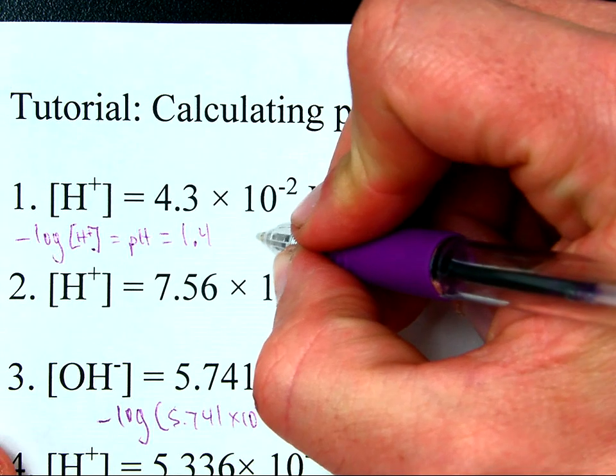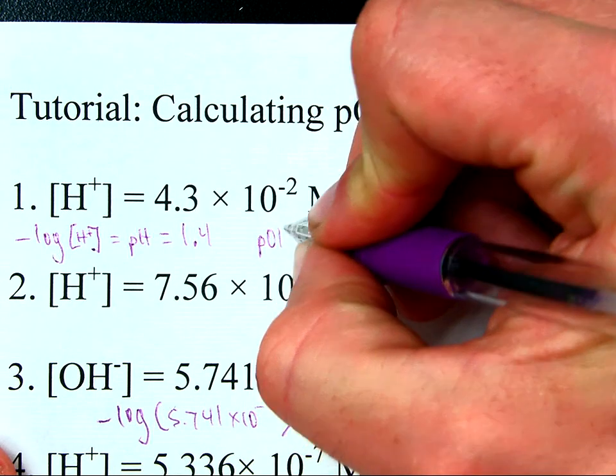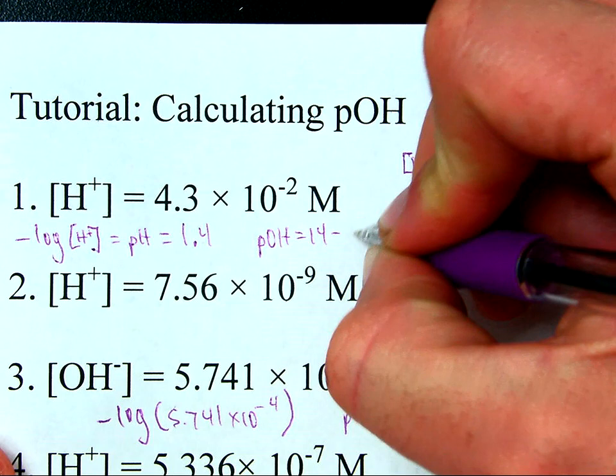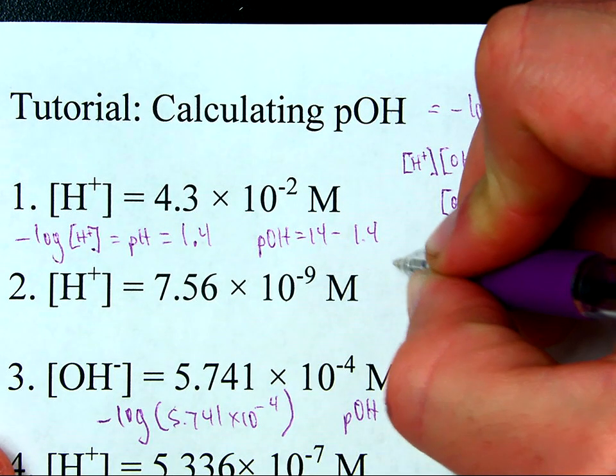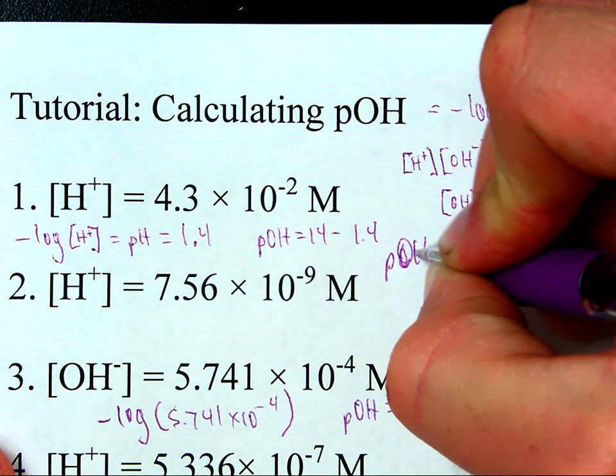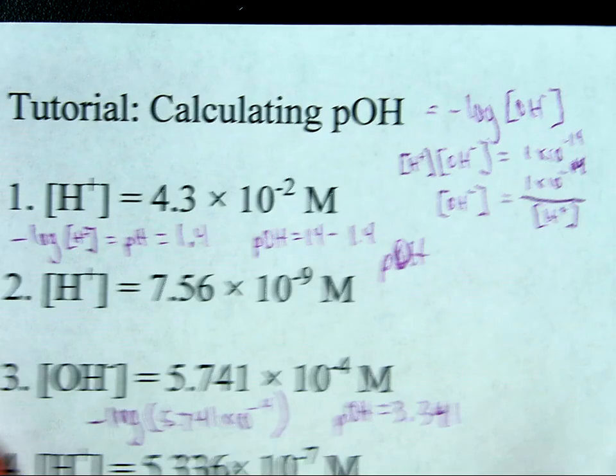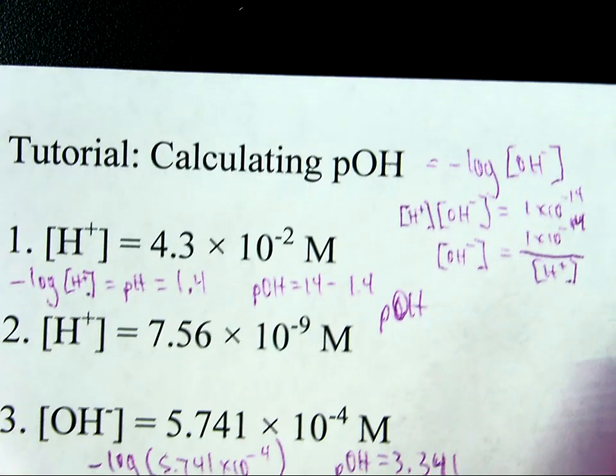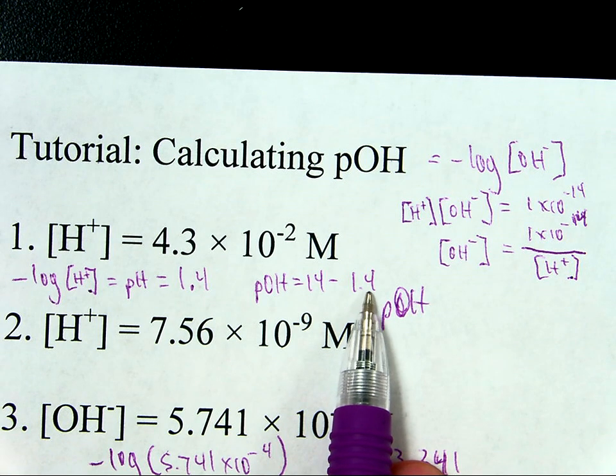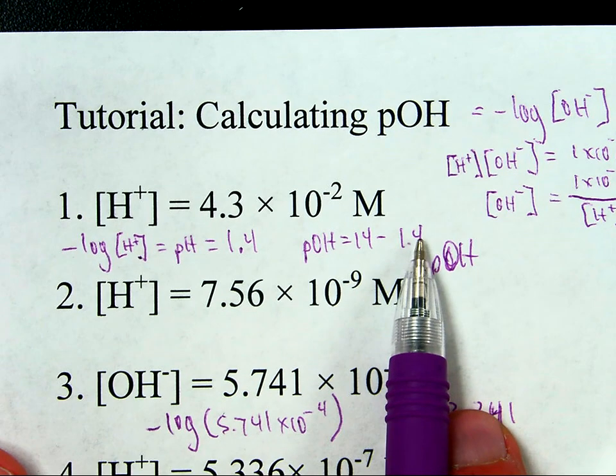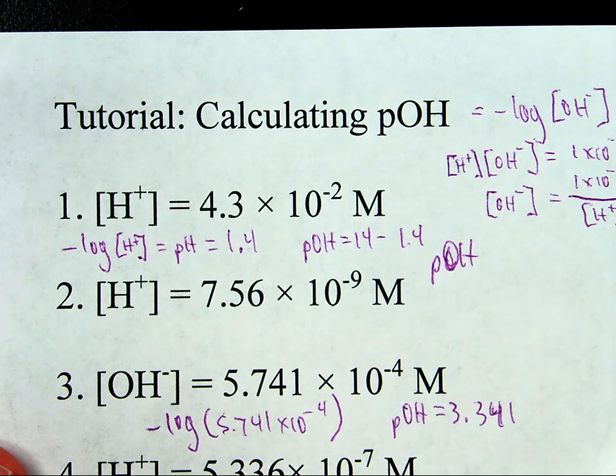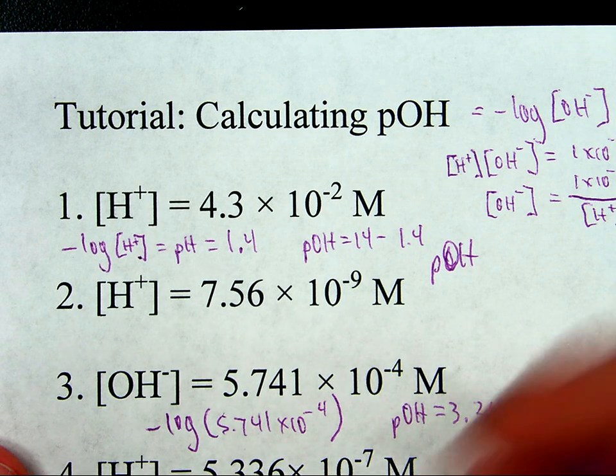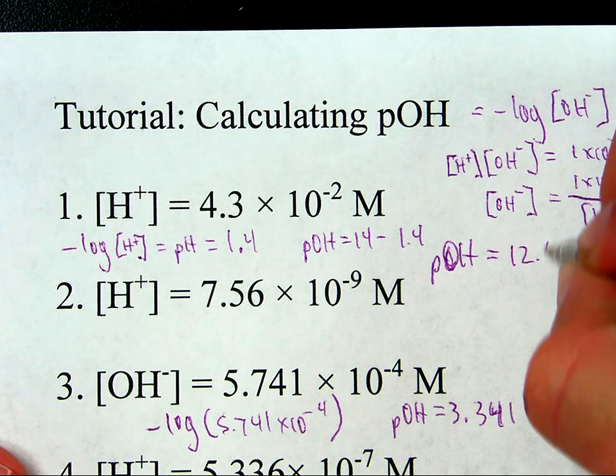And then, pOH equals 14 minus 1.4. Okay, that's in reference to this calculation here. pOH equals 14 minus pH, so the pH is 1.4. Then, pOH is 14 minus 1.4, which is 12.6. So, pH equals 12.6.